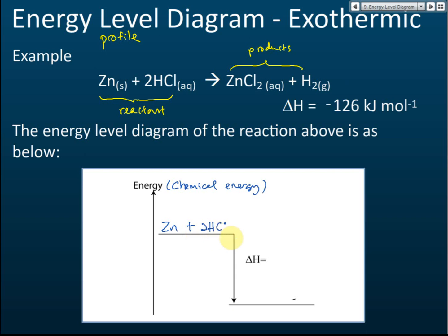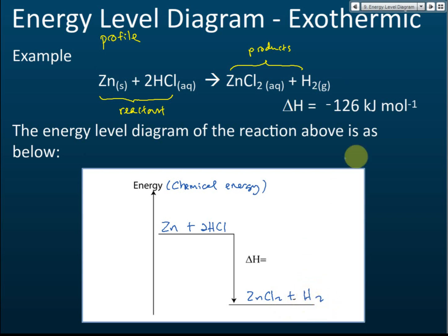For this reaction, the reactants are zinc and HCl, so you must write zinc plus 2HCl. You must balance the equation — don't just write zinc and HCl. The product is zinc chloride and hydrogen gas, and the heat of reaction is negative 126 kilojoules per mole.